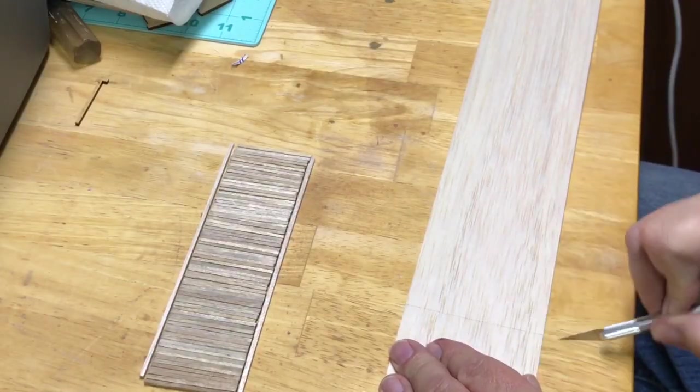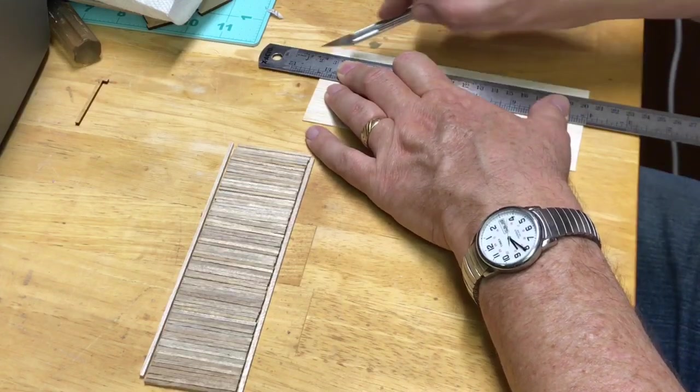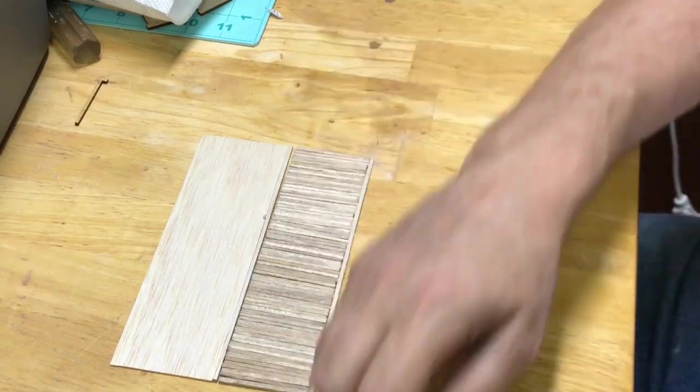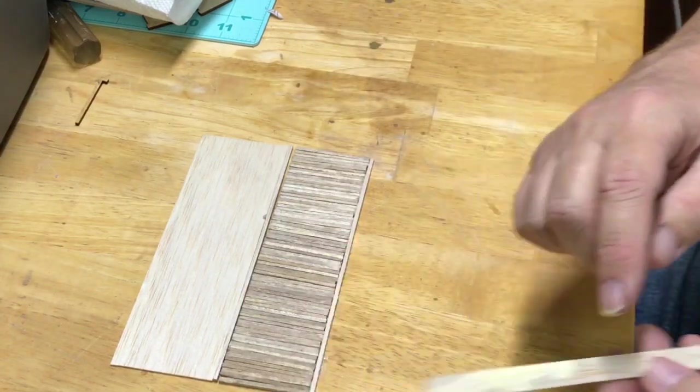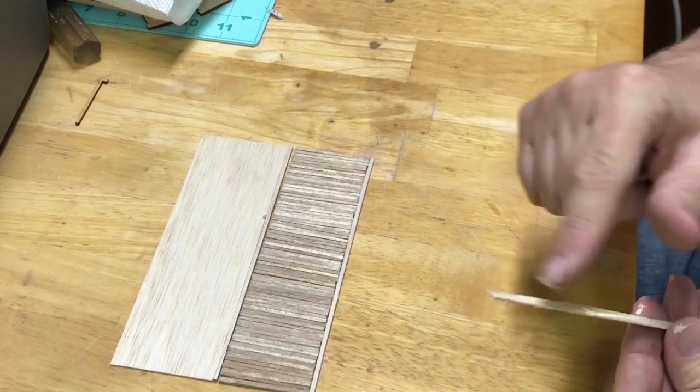I used strips of balsa wood to hold the individual planks together from the underside. It's important to cut slowly and if need be make multiple passes in order to not split the balsa wood when cutting it.